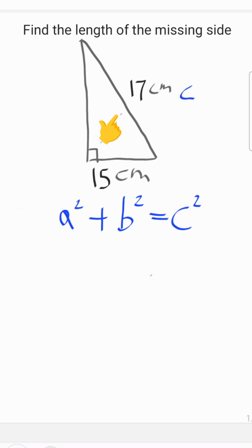So in this case we'll call c 17, b 15, and a the missing side.